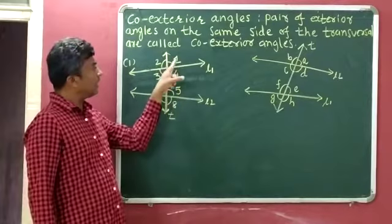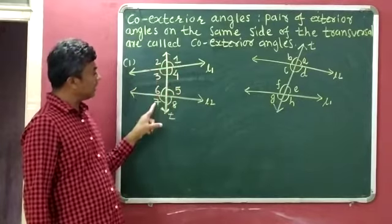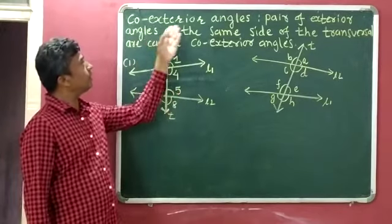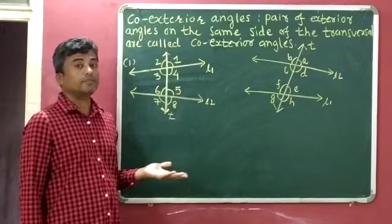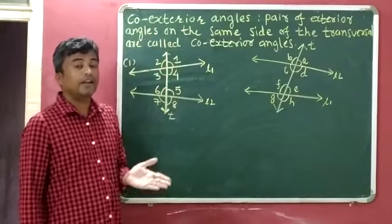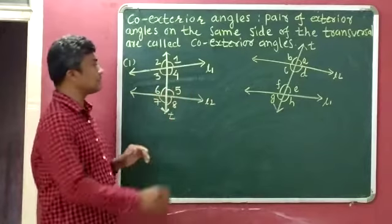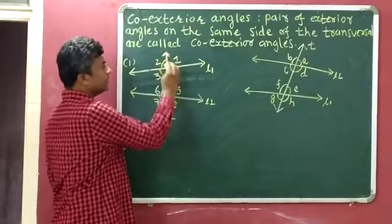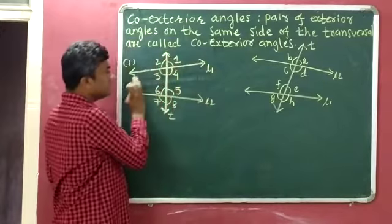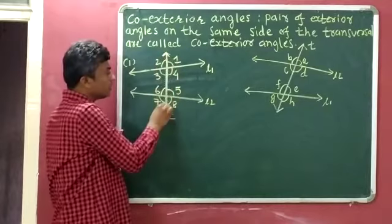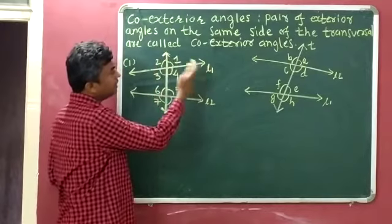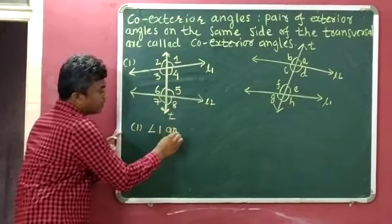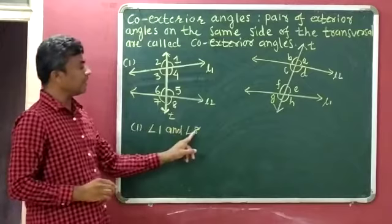Out of these 8 angles, angle 1, angle 2, angle 7, and angle 8 are exterior angles. Now we have to identify co-exterior angles. Co-exterior angles means they are exterior angles and they lie on the same side of the transversal. This is the transversal line T — it has one side and a second side. On the first side, the exterior angles are angle 1 and angle 8. So the first pair of co-exterior angles is angle 1 and angle 8.